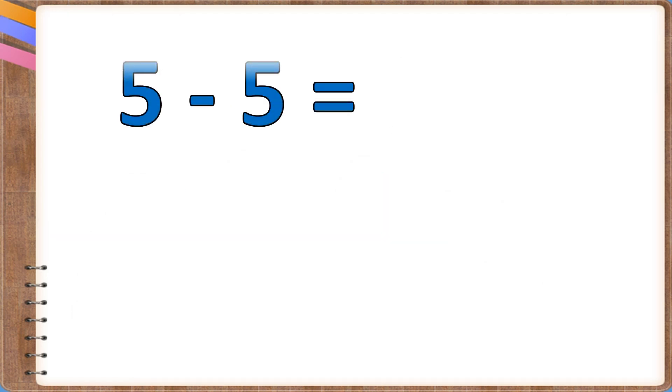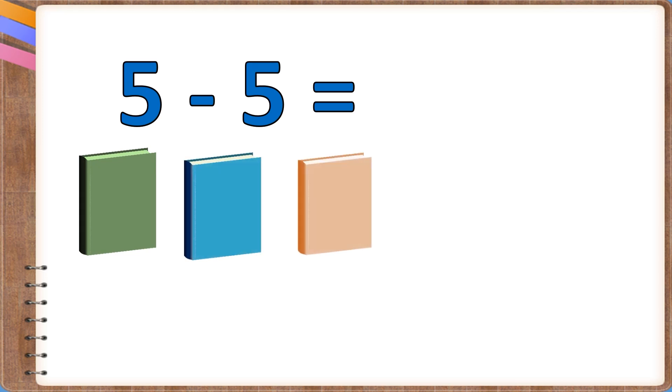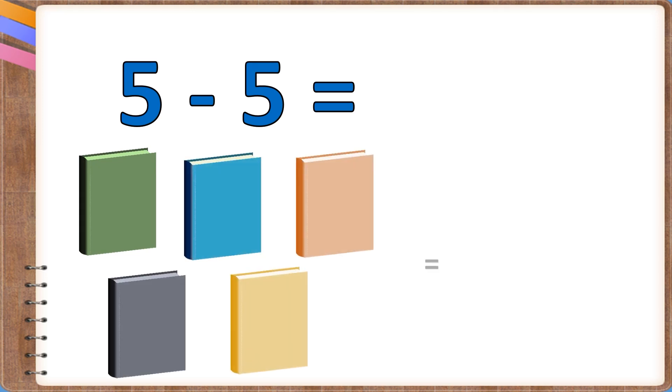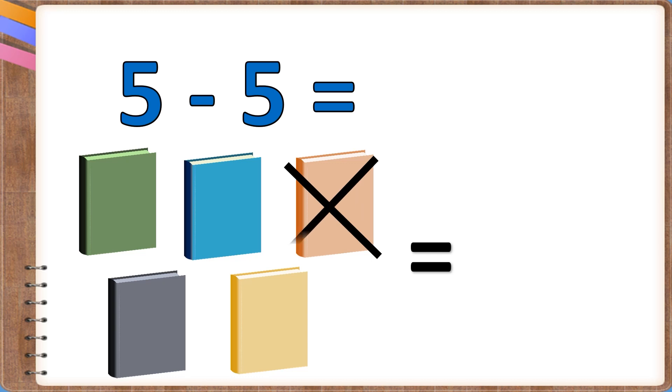5 minus 5. There are five books on a table. You removed all of them.